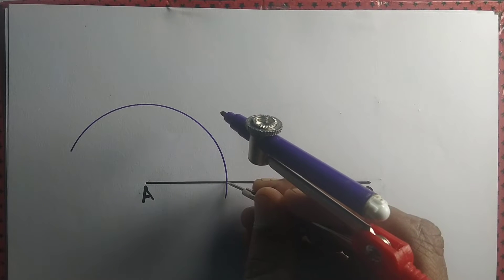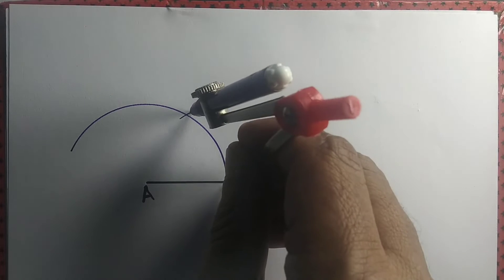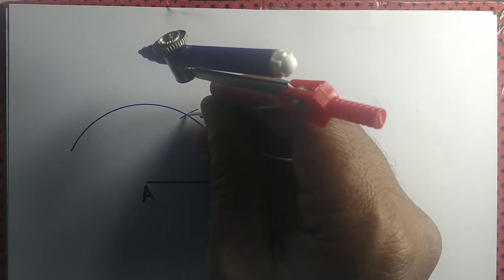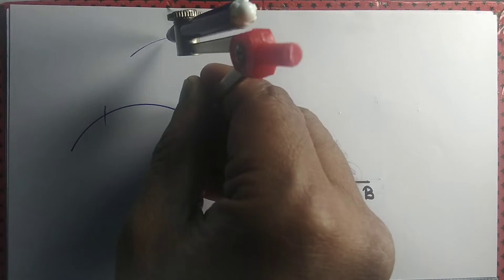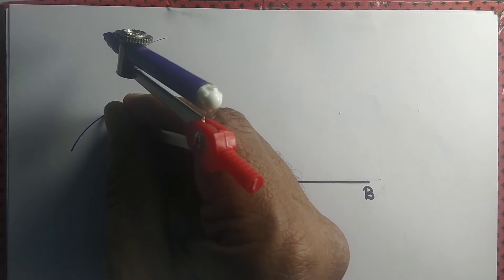We maintain the same radius and draw another arc, and once again maintain the same radius, draw another arc and then another and then another.